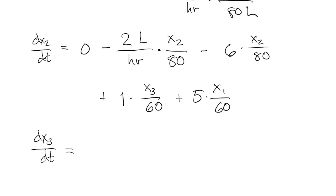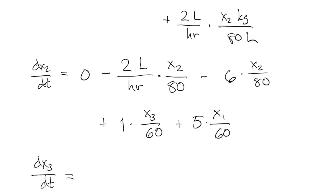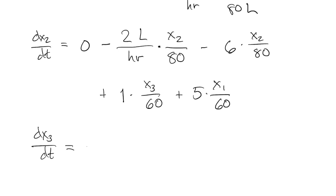In tank three, we have an input, but again, it has no salt in it. So it makes no contribution to the mass. There's an output of six liters per hour. So we lose six times the concentration in the tank three.